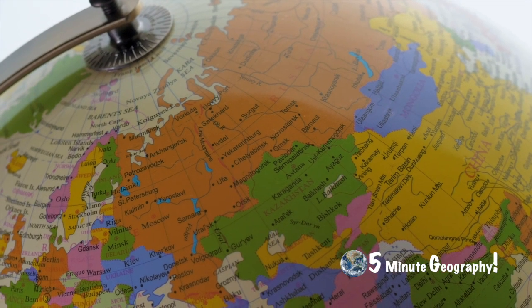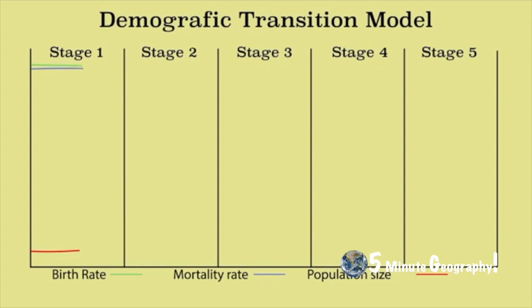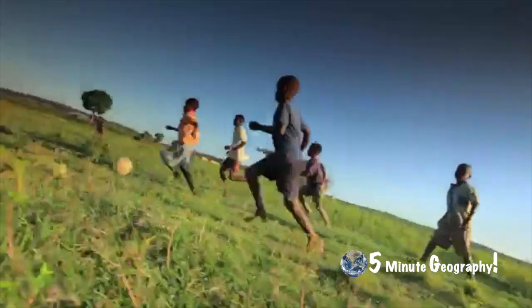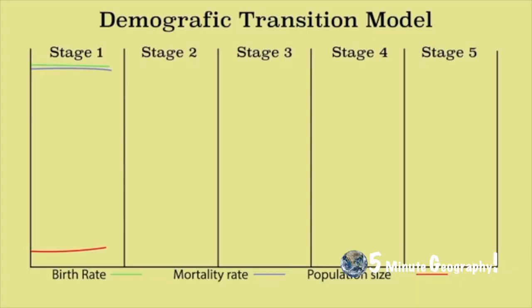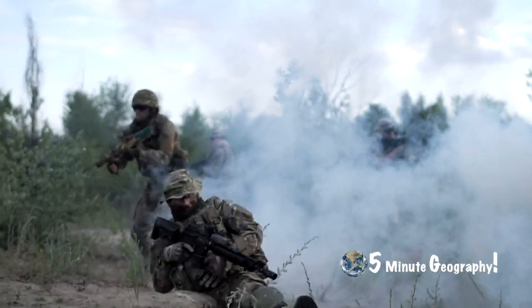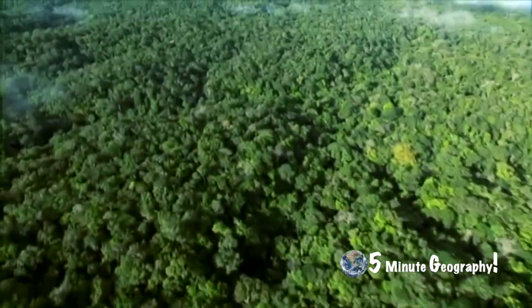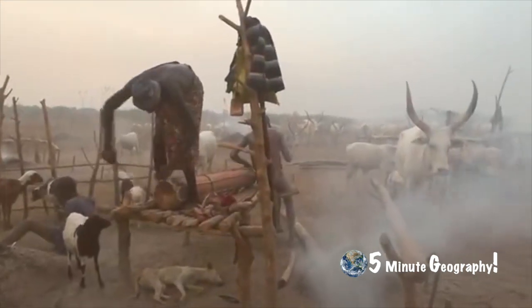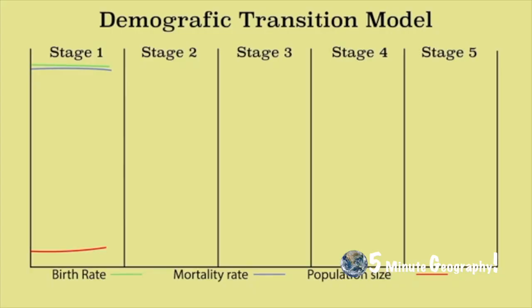Stage one, or the high fluctuating stage. Birth rates here are high because children are seen as an economic asset and because many children die before the age of five, so people tend to have more children to ensure some of them survive. Death rates are also high because of things like war, unsafe or contaminated water supplies, famine and infection. Europe was once at this stage during the Middle Ages, though a few tribal groups in remote areas such as the Amazon rainforest and Borneo may still be at this stage today. Birth rates and death rates are high, largely cancelling each other out, leaving overall population growth very small.